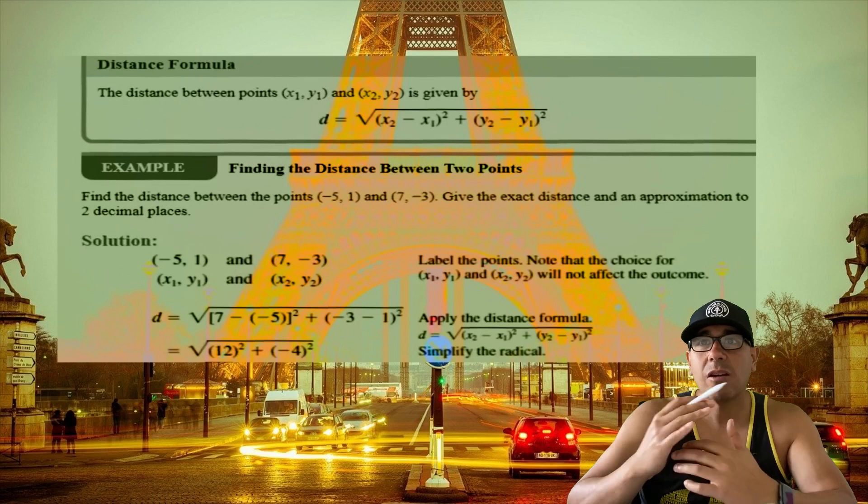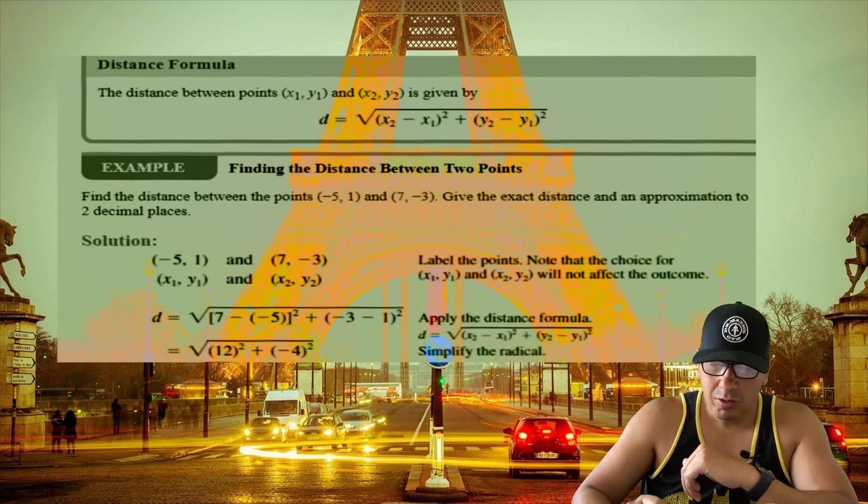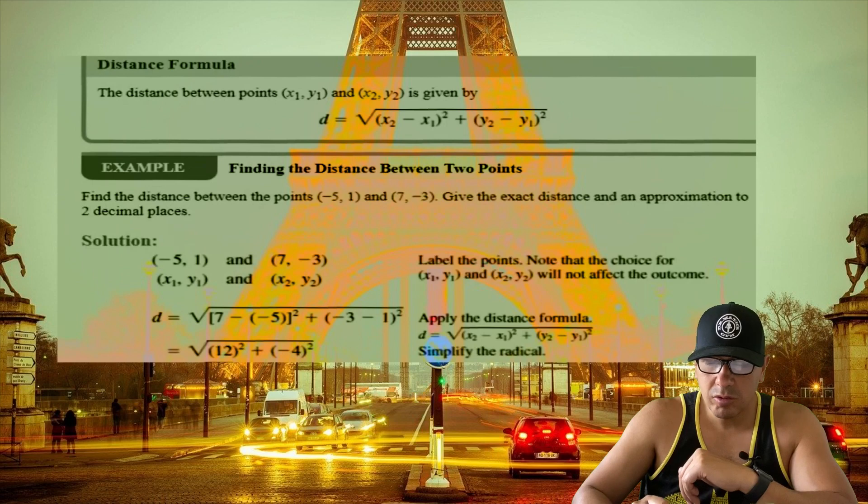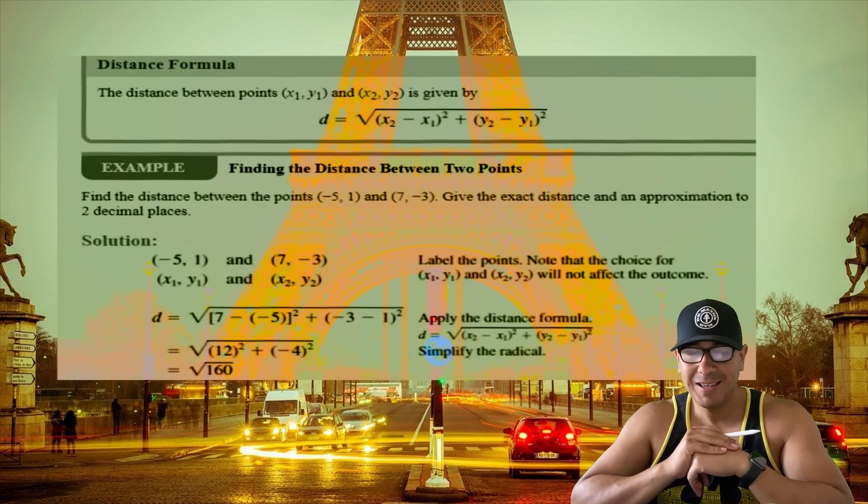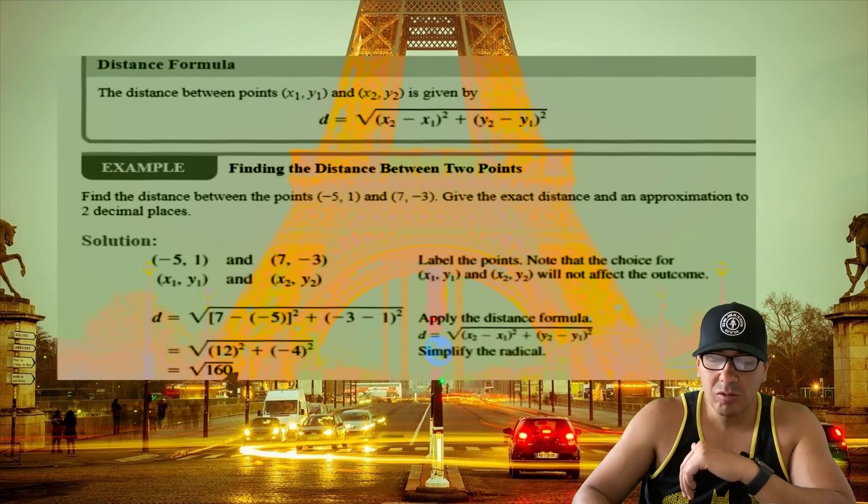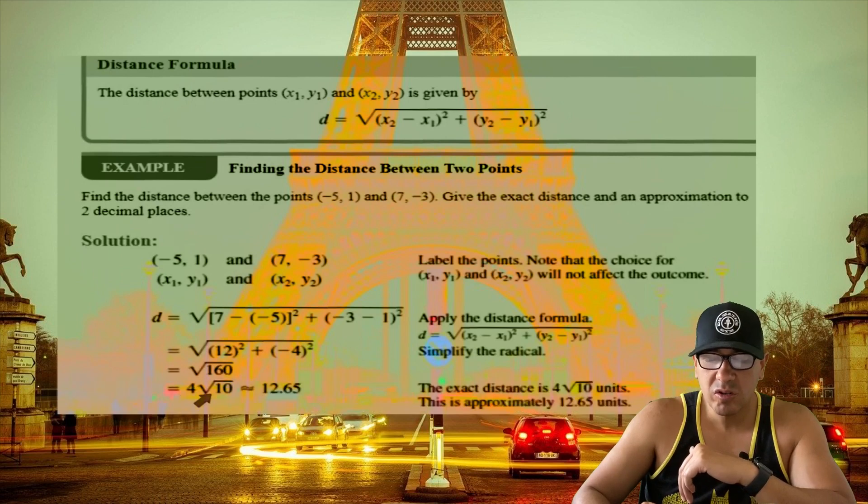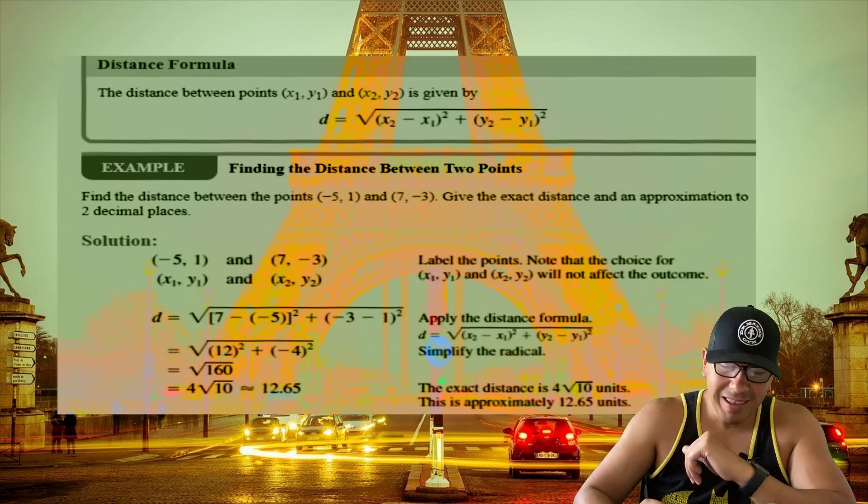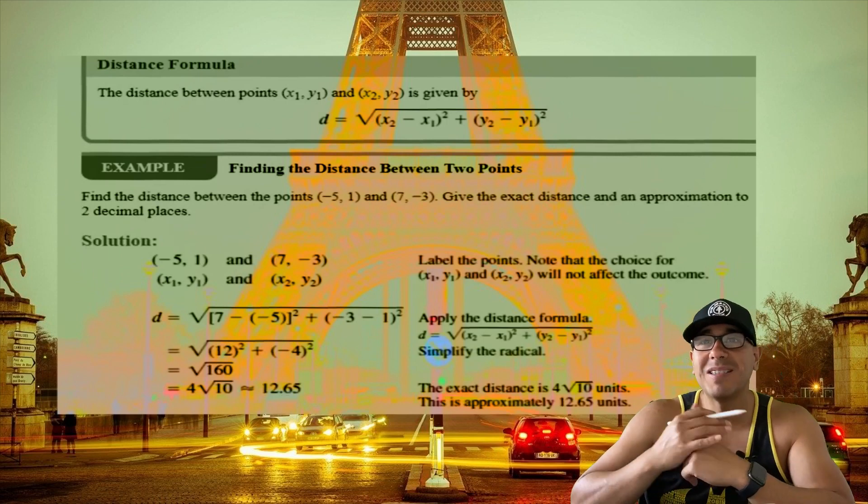We'll go ahead and simplify the radical, so we get 144 plus 16, which gives me 160. We always simplify our radicals as much as possible. The 160 turns into 4√10, and we punch that into our calculator and approximate it to 12.65. This is our approximation to two decimal places and this is what we call our exact answer.